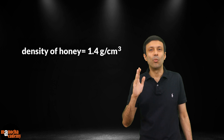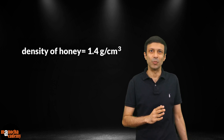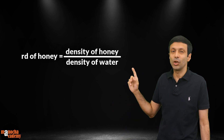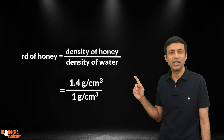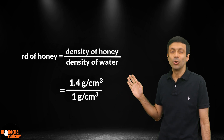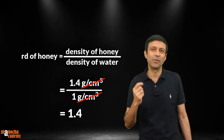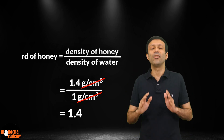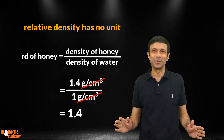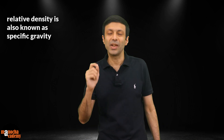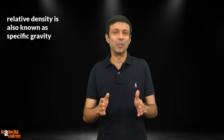Now what about honey? Honey had a density of about 1.4 gram per centimeter cube. You can find the relative density by using the formula — it's going to be density of honey divided by density of water. The units will cancel each other and we get the relative density of honey as 1.4. Note that relative density does not have any units because the units cancel each other. Relative density is also known as specific gravity.